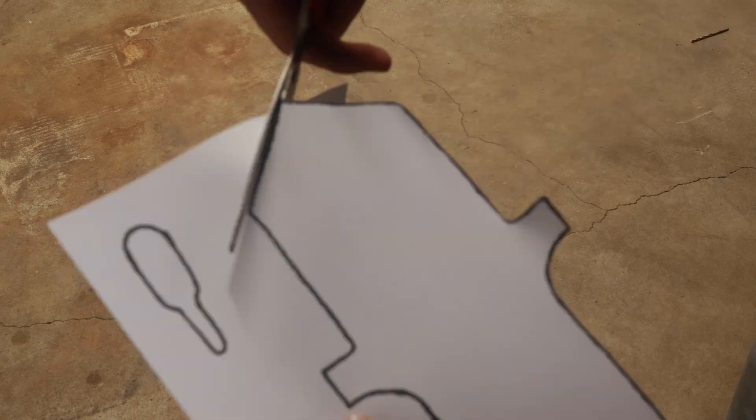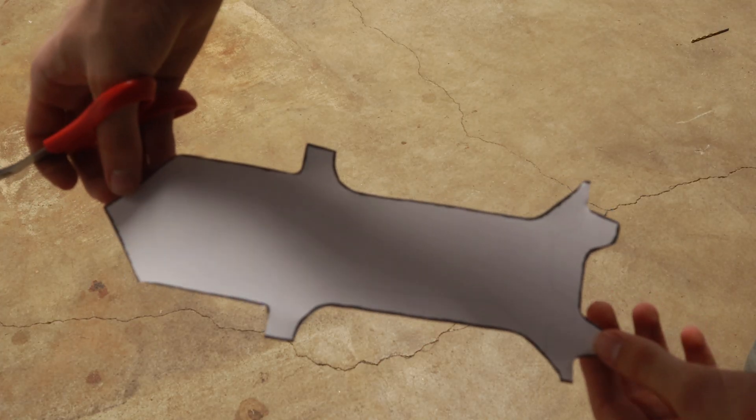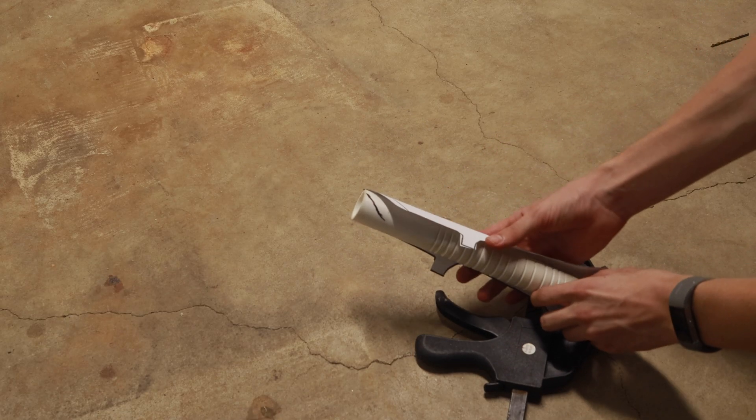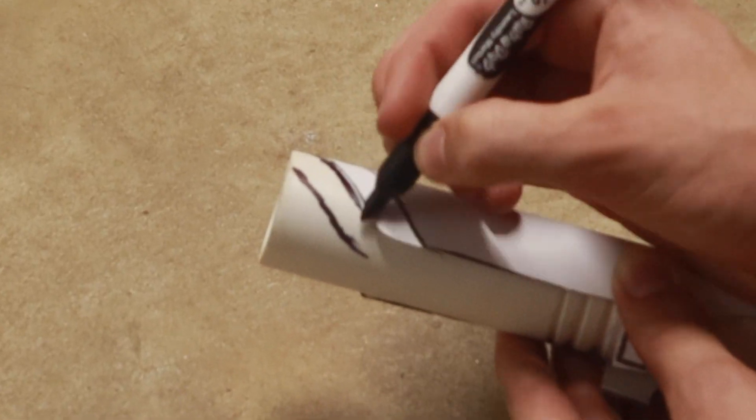Then I'm going to print out these templates, which you can find in the description on cardstock, and then cut them out. I'll wrap the larger section around the piece of PVC so that I can mark the line for cutting the emitter off.